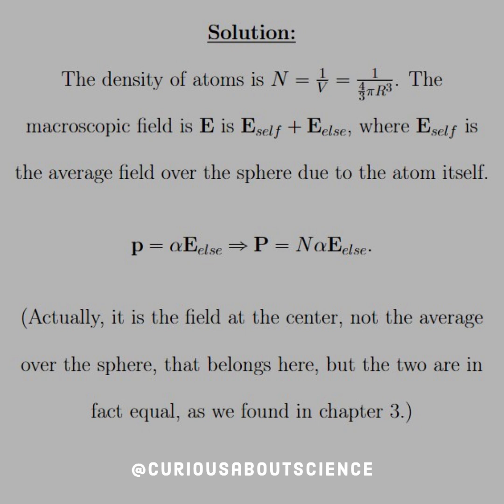The macroscopic field is E though, but this E is composed of the atom itself and everything else. So E_self is the average field over the sphere due to the atom itself.